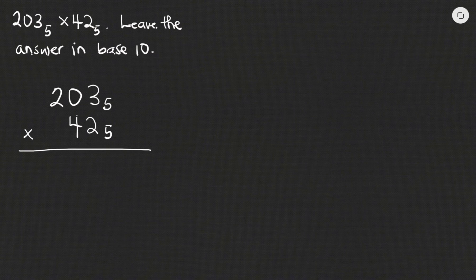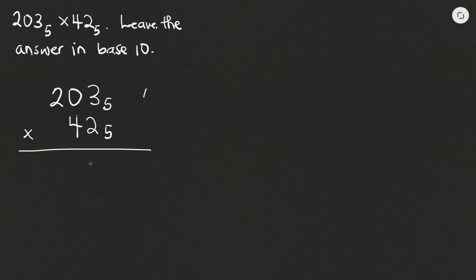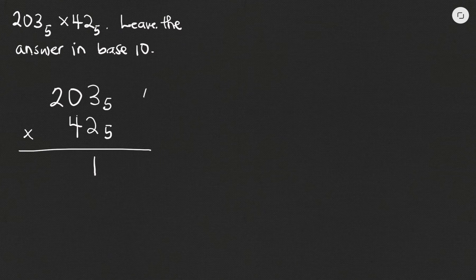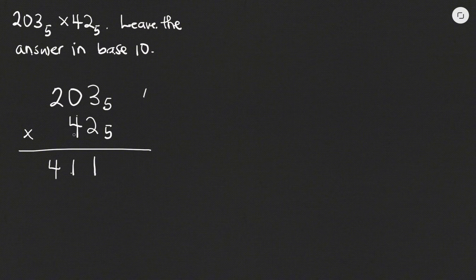So 2 multiplied by 3 gives me 6. Because 6 is above 5, we ask how many times 5 goes into 6 — once, leaving remainder 1. So we write down the remainder 1. Then 2 multiplied by 0 is 0, plus the 1 we carried, gives 1. Then 2 multiplied by 2 is 4 — not above 5 — so we write down 4.